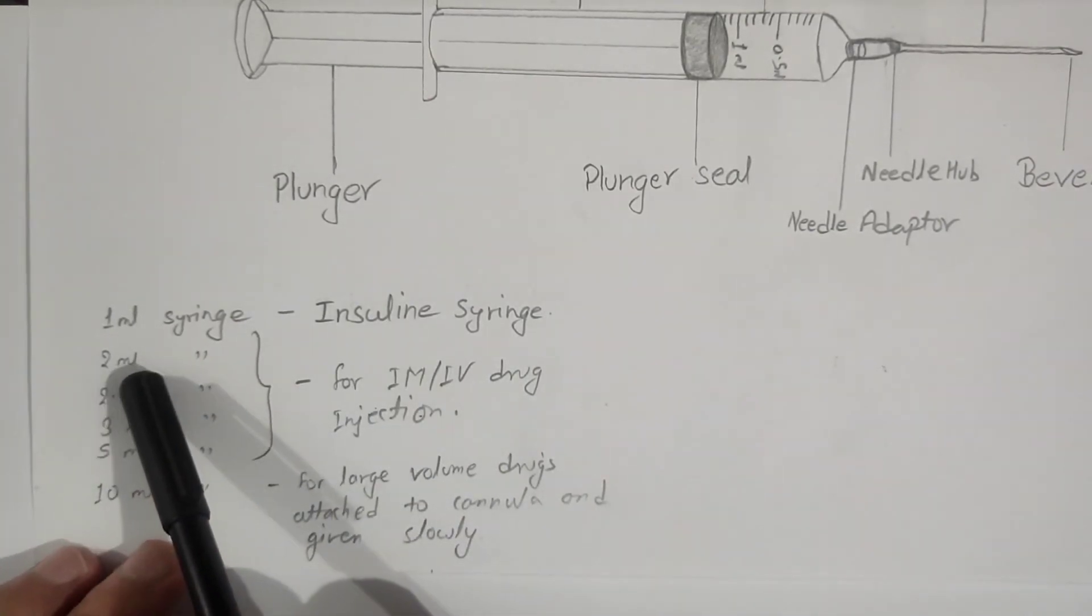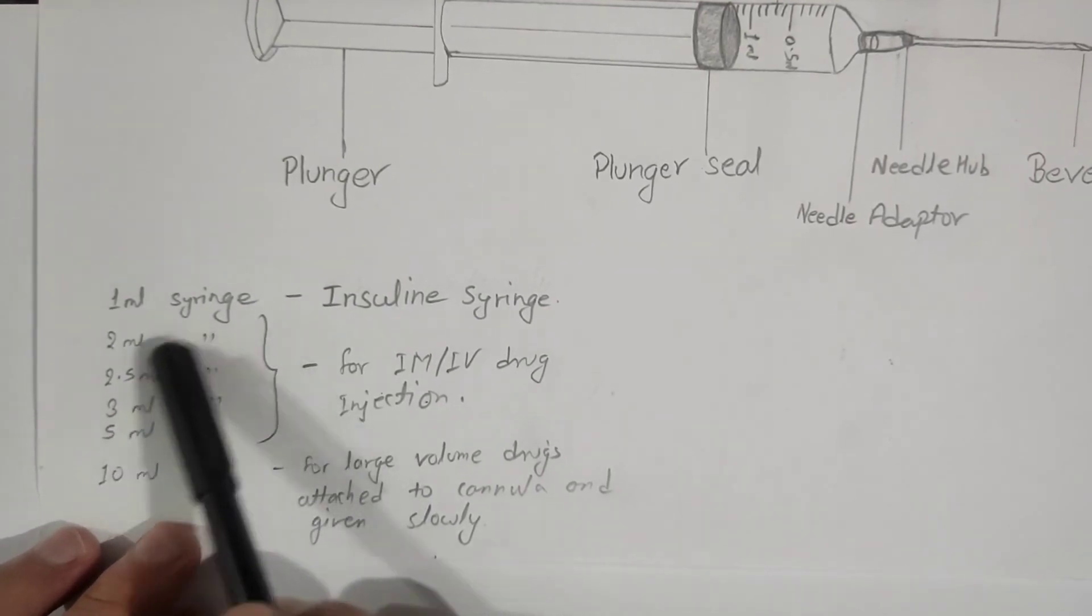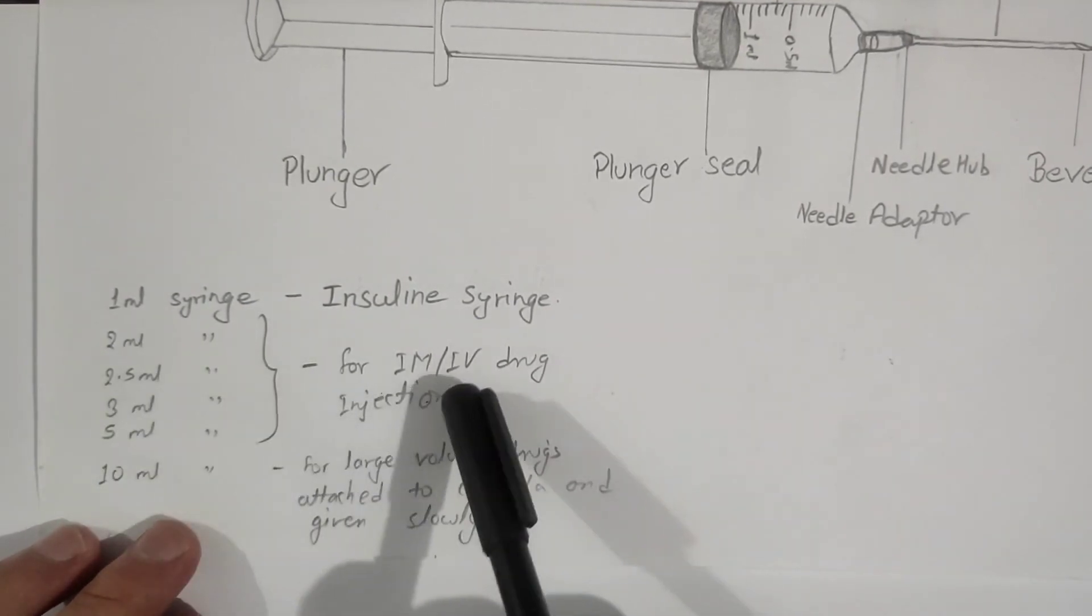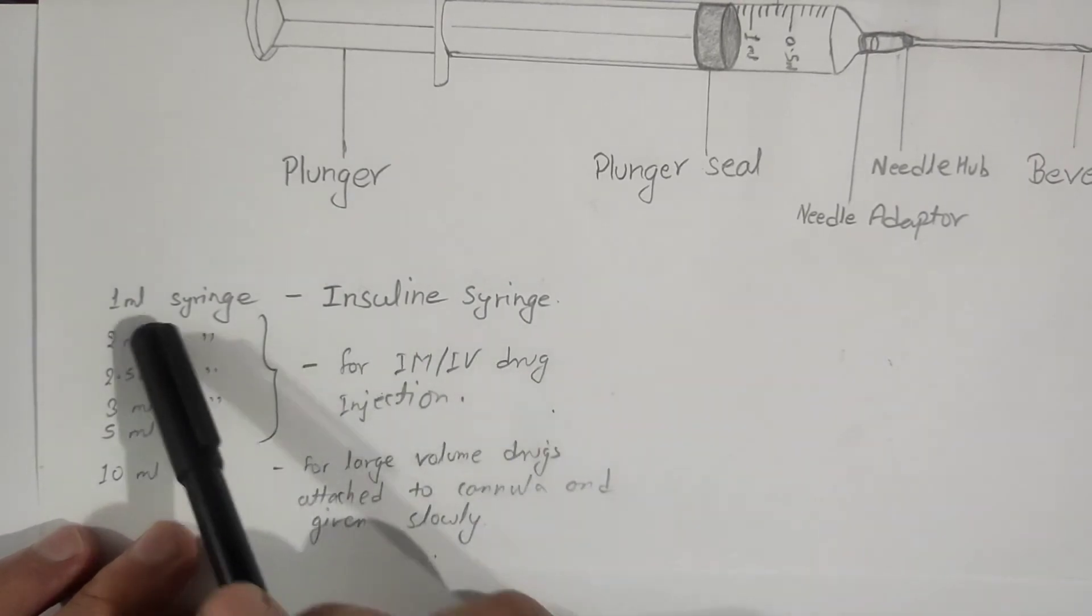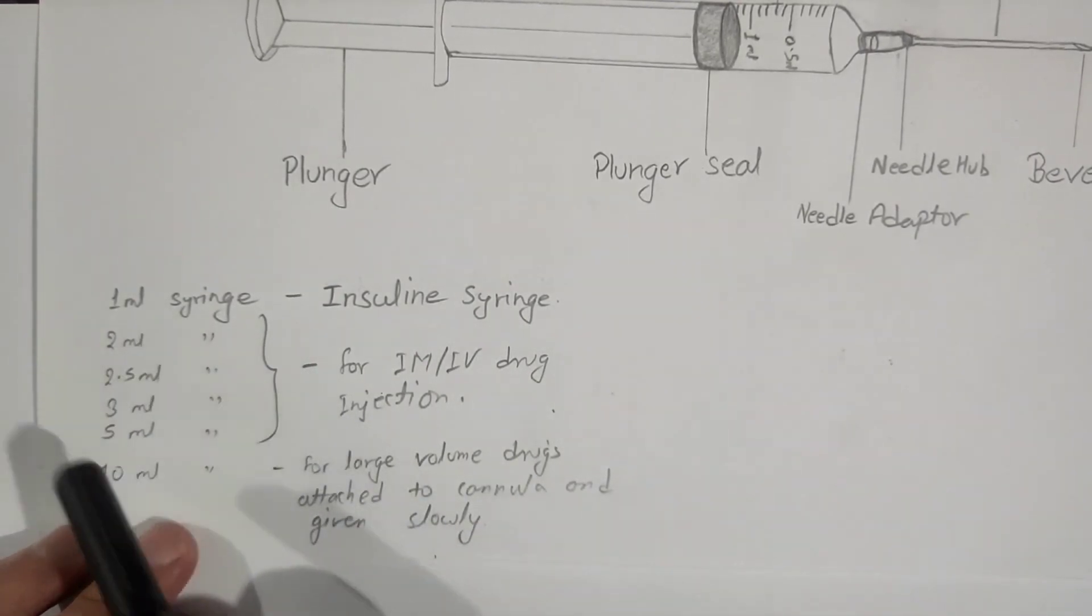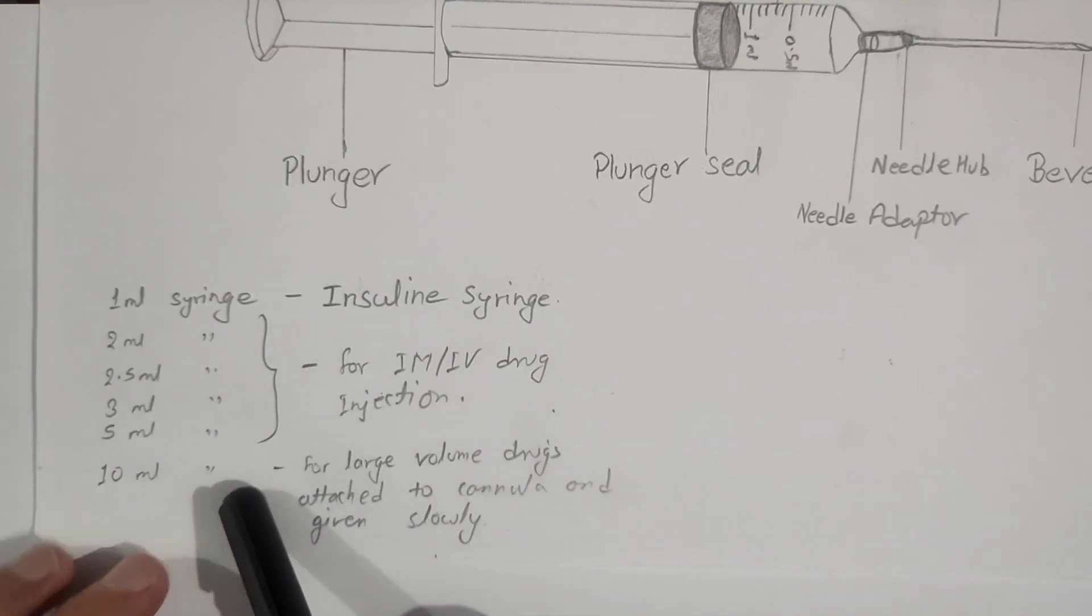Another type includes 2ml, 2.5ml, 3ml, and 5ml syringes. These syringes are mainly used for IM and IV drug injections. It depends on the volume of drug we are going to inject.